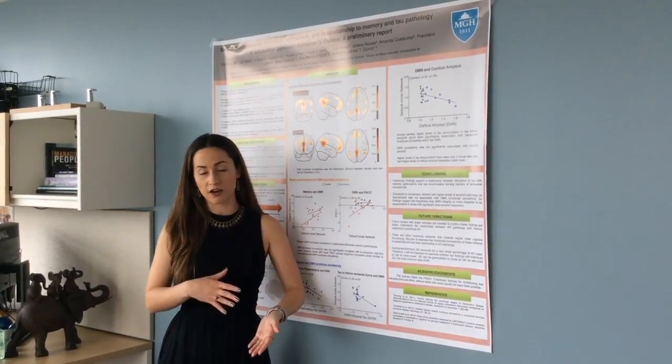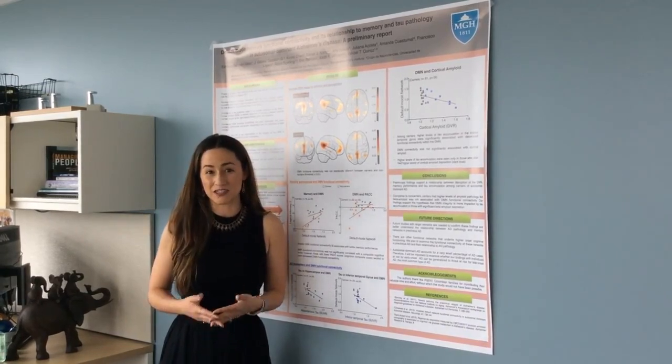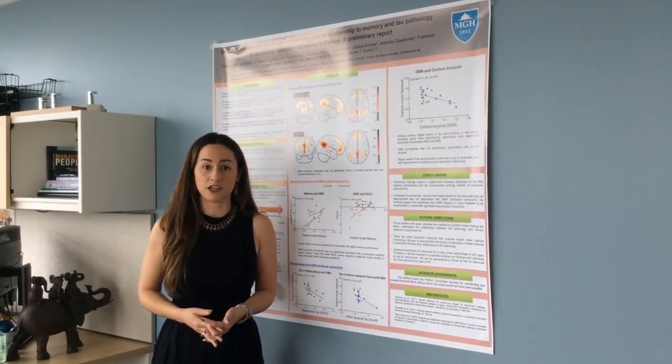So basically, we know if you have the mutation, you're going to develop Alzheimer's disease. They usually start showing symptoms around the age of 44.